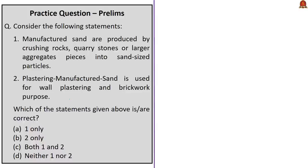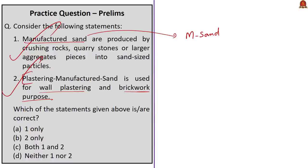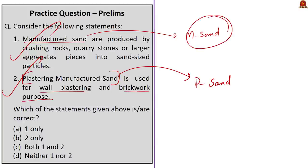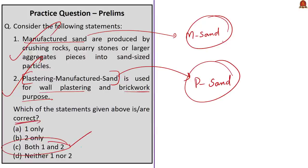The last question is a two-statement question. Statement 1: Manufactured sand or M-Sand is produced by crushing rocks, quarry stones, or larger aggregate pieces into sand-sized particles — this is correct. Statement 2: Plastering M-Sand (P-Sand) is used for wall plastering and brickwork purpose — this is also correct. P-Sand is a very fine grade of sand used for wall plastering and brickwork, and proper selection of P-Sand provides plastering strength to the construction structure. The correct answer is option C — both statements 1 and 2 are correct.